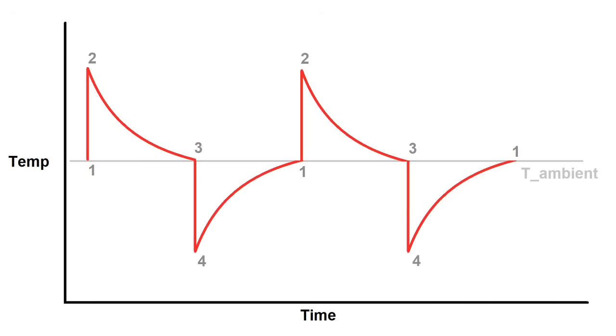Here's what the cycle would look like on a temperature versus time graph. From point three to four, we're creating a temperature drop, but we're also heating from point one to two, so there's no net cooling effect. We're going to have to change this system a little bit to make it useful.